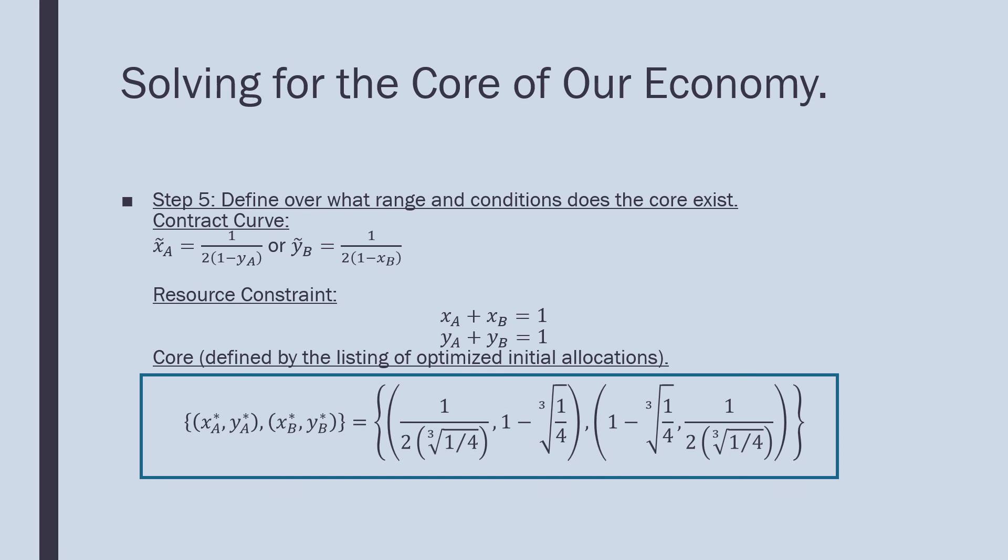The core, which is what most people ask for, is defined by the points (X_A star, Y_A star) and (X_B star, Y_B star). We get this allocation here—it's a big mess. The term 1 over (2 times the cube root of 1/4) comes from substituting our values of 1 minus the cube root of 1/4 into our contract curve. This is the core of our economy.